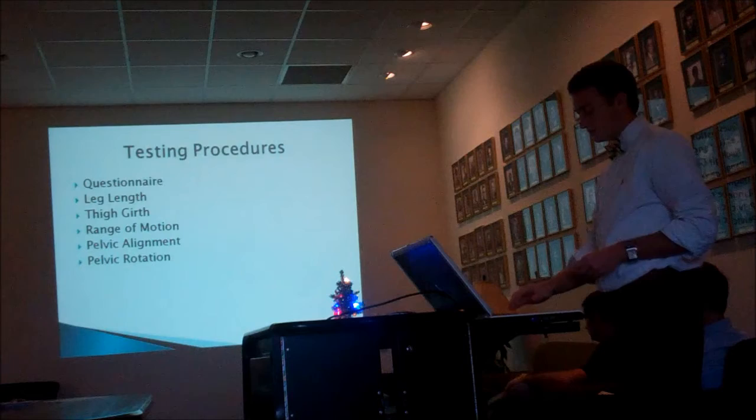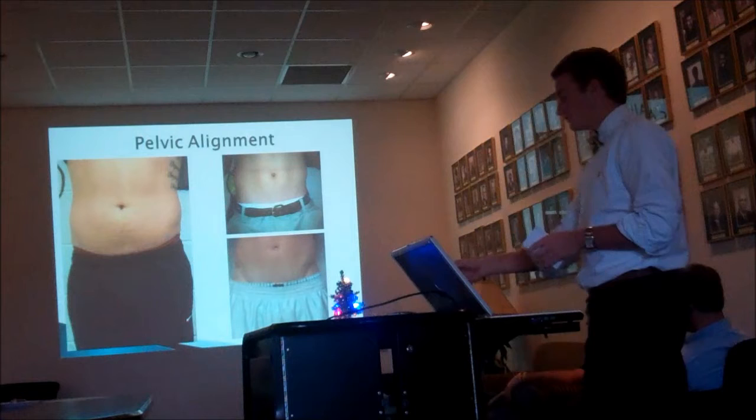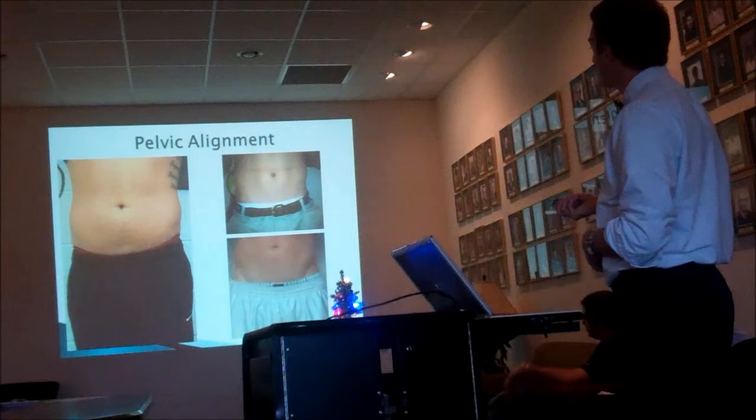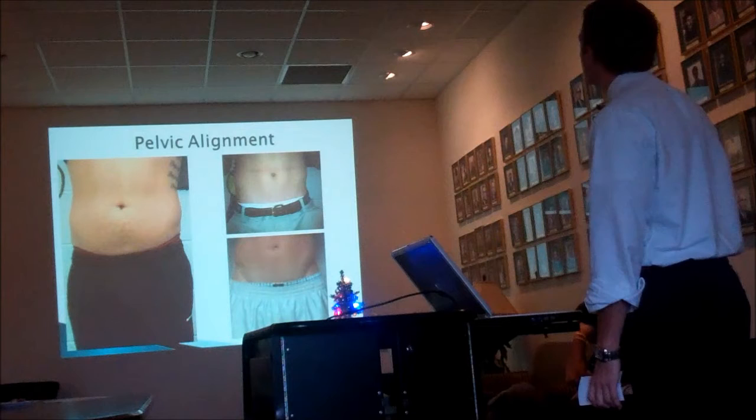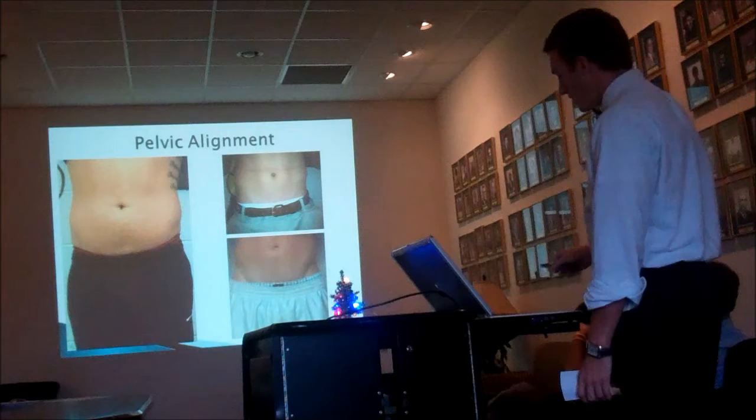Here are some pictures from the ASIS assessment. You can see that the left was higher than the right here. This one is a good example — the left is a lot higher than the right ASIS. And this one is a little harder to see, but the left is also higher than the right. All three of these athletes did suffer from an upper leg injury.